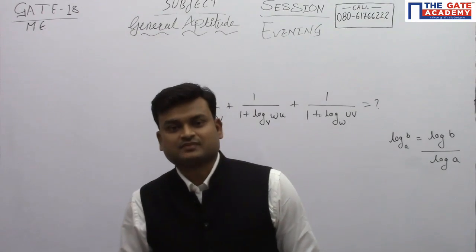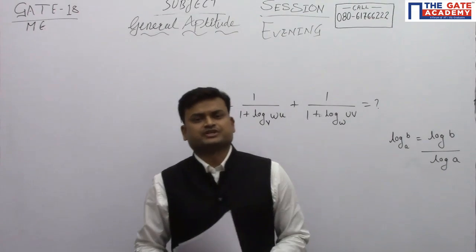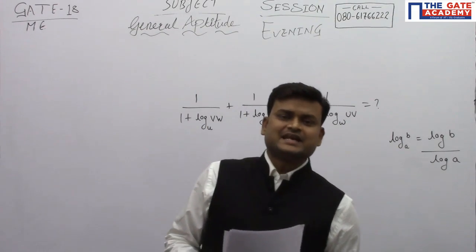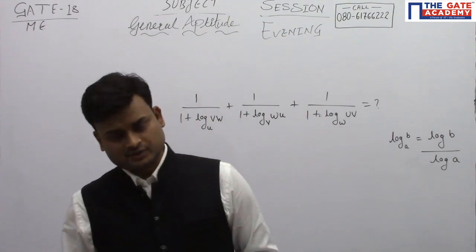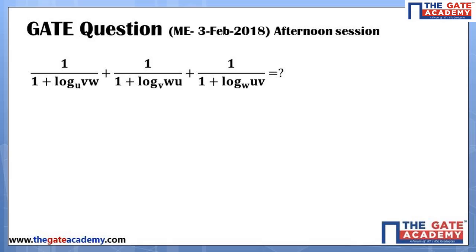Hello friends, let's solve the next memory-based GA question from GATE 18 mechanical afternoon paper. The question is: 1 upon 1 plus log VW to the base U plus 1 upon 1 plus log W to the base V plus 1 upon 1 plus log UV to the base W is equal to how much?